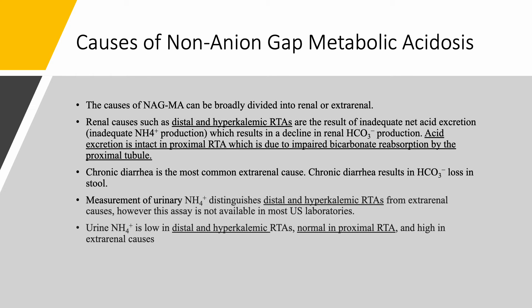Chronic diarrhea is the most common extra-renal cause. If we measure urine ammonium — and it's not easy — we can distinguish distal and hyperkalemic RTA from extra-renal causes. But you cannot distinguish diarrhea from proximal RTA because in both cases NH4 is adequate and you have a negative anion gap; you need history and context. Urine NH4 is low in distal renal tubular acidosis and in hyperkalemic RTA — whether voltage-dependent or type 4 — and it's also low in advanced chronic kidney disease.